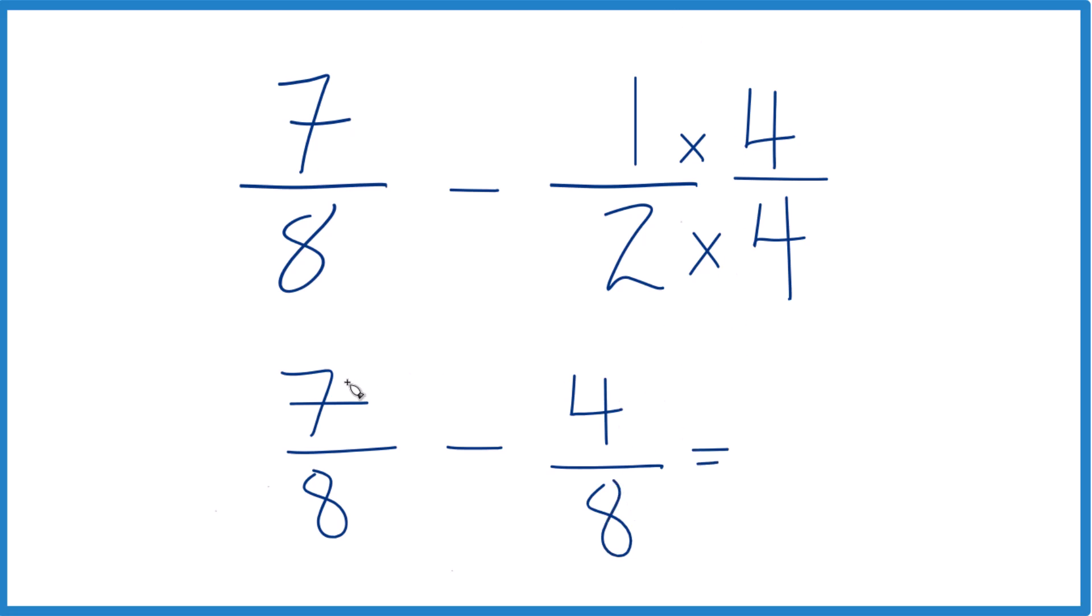But when I subtract 7 minus 4, that gives me 3. Keep the 8 the same. And I end up with 3 eighths.